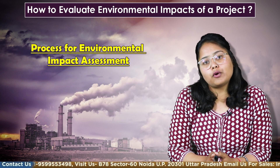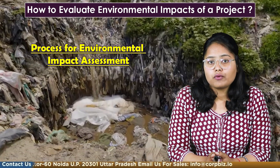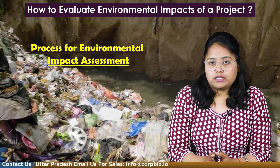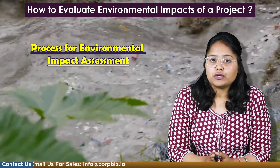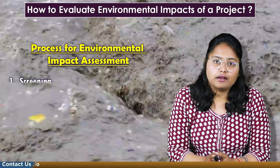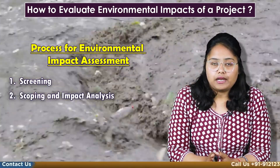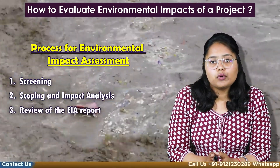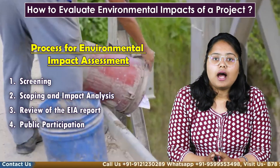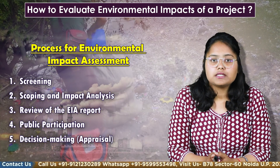So what is the process for Environmental Impact Assessment? To assess the environmental impacts of any project or activity, the following steps as per EIA Notification 2006 are: 1st step is Screening, 2nd step is Scoping and Impact Analysis, 3rd is Review of the EIA Report, 4th is Public Consultation, and 5th is Decision Making, which means Appraisal.